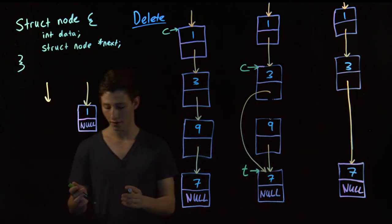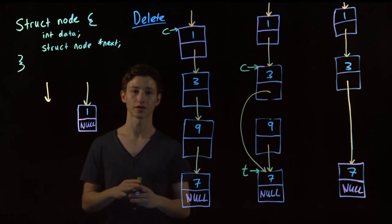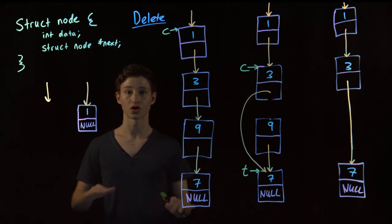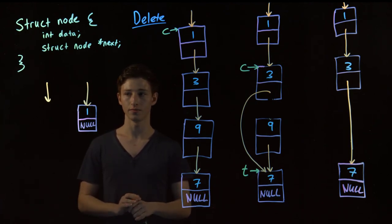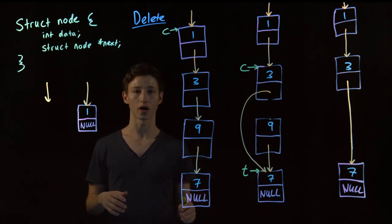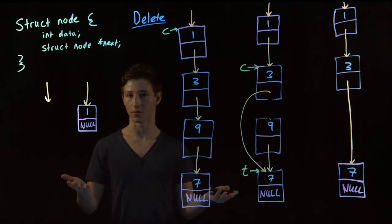So now we have the case of, if we have an empty list, right, we can straight away just return our list, because we don't have to delete anything. So if our list is null, we can either return the list, or we can return null, because they're the same thing.